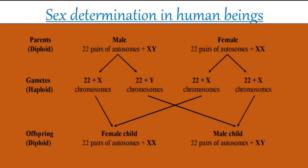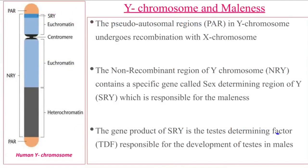The first 44 chromosomes are called autosomes, and the last two chromosomes are called allosomes. In humans, the sex of an individual is determined by the Y chromosome. Next we will discuss the Y chromosome and maleness.